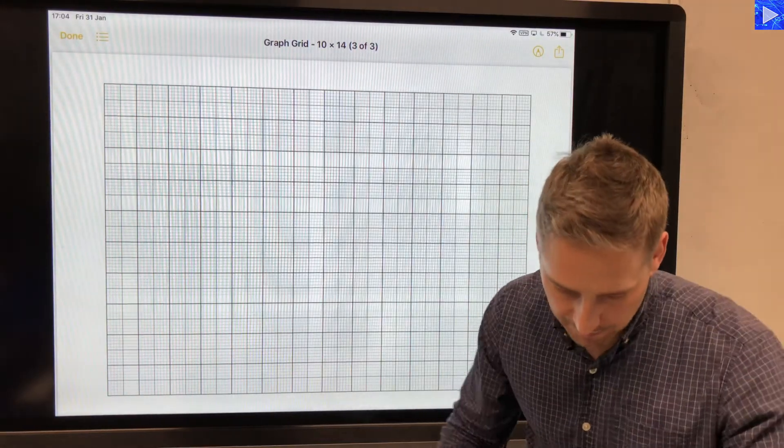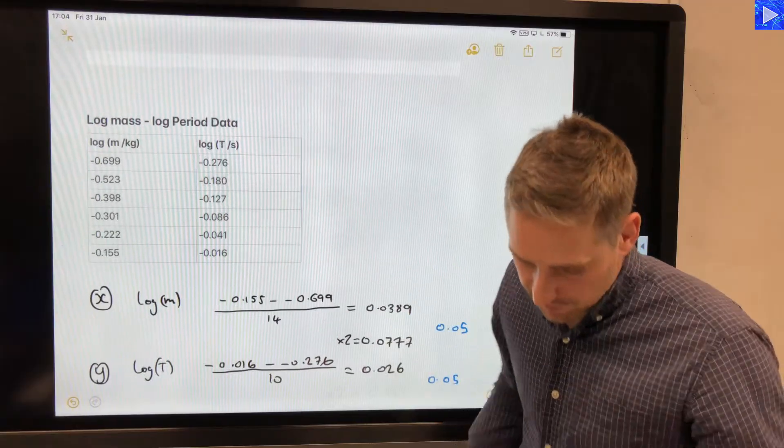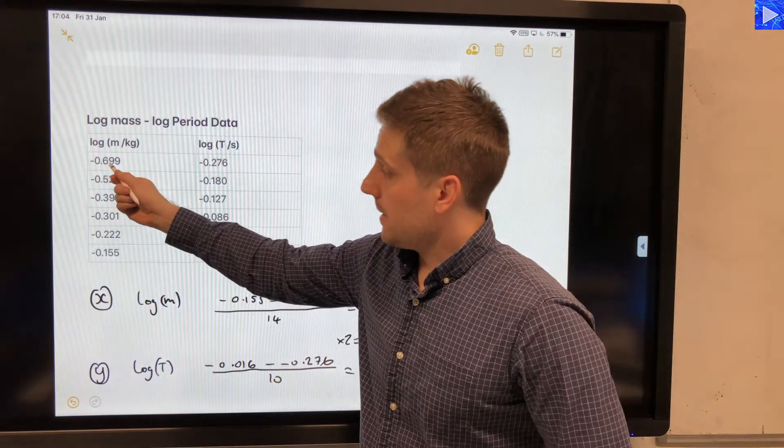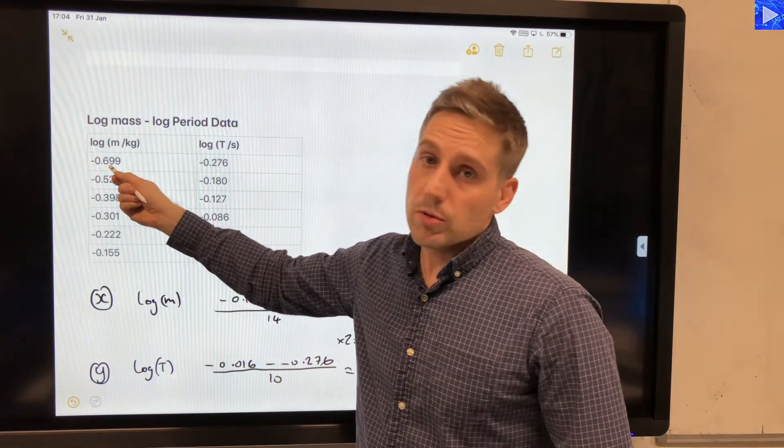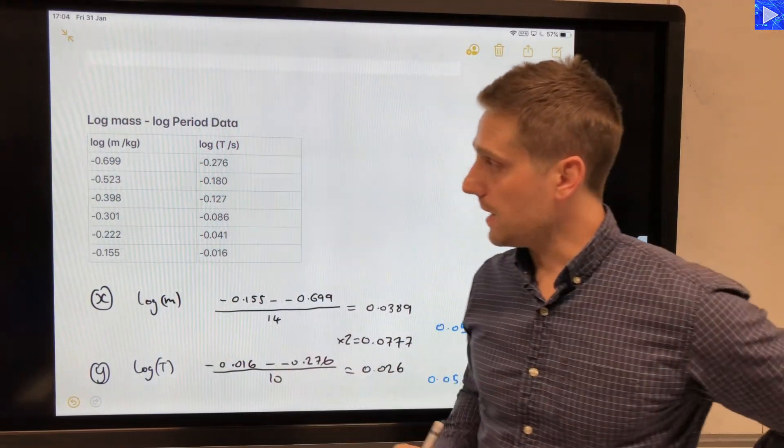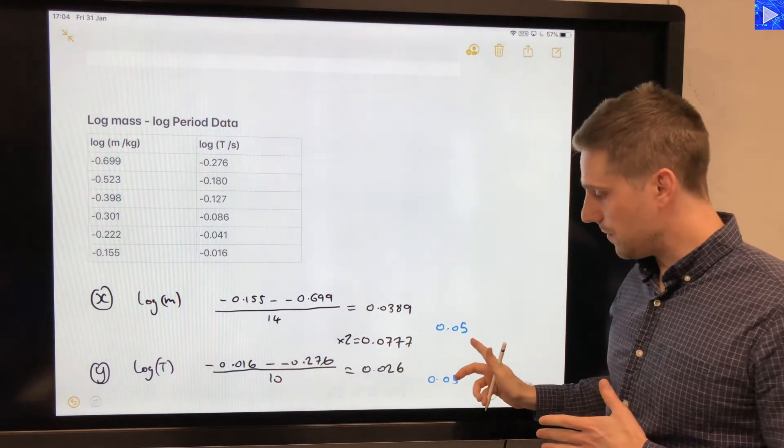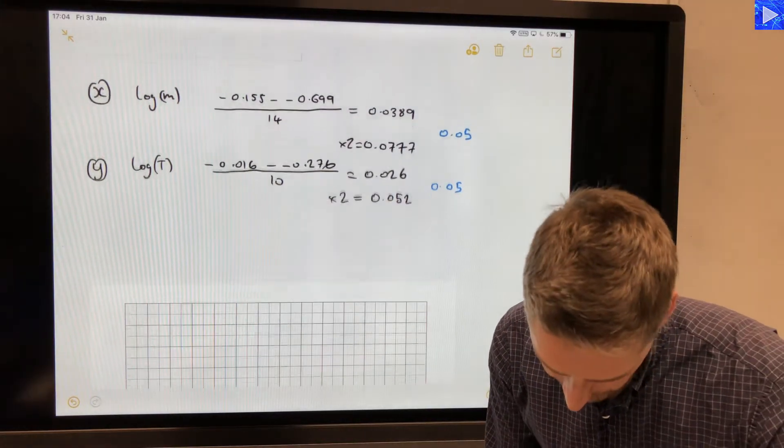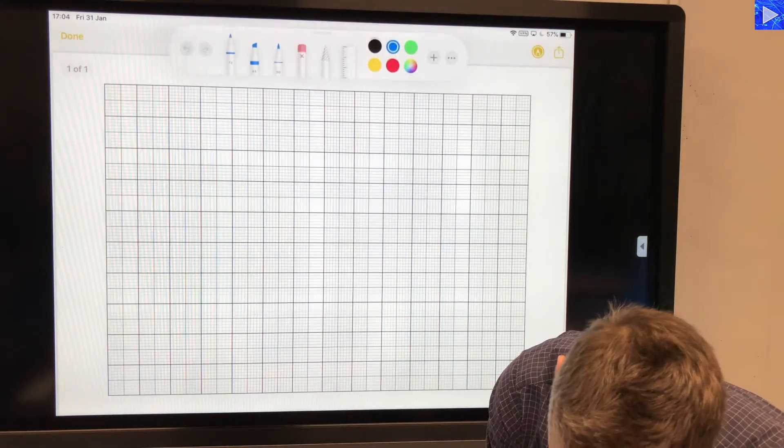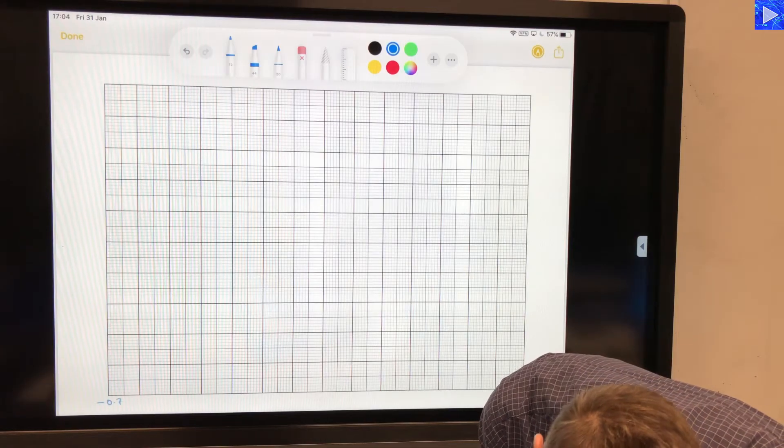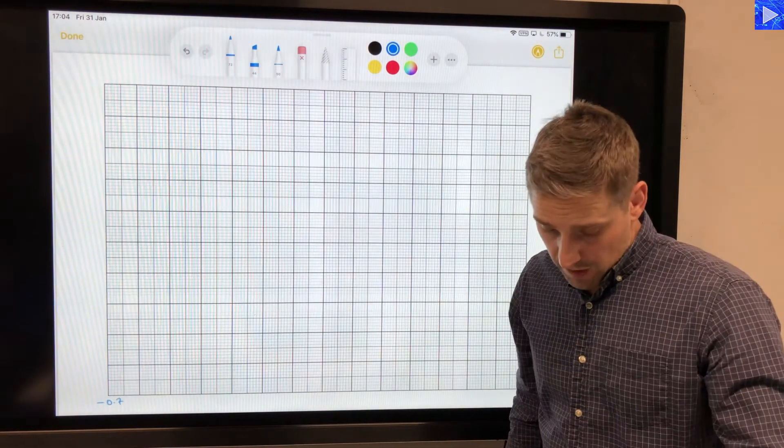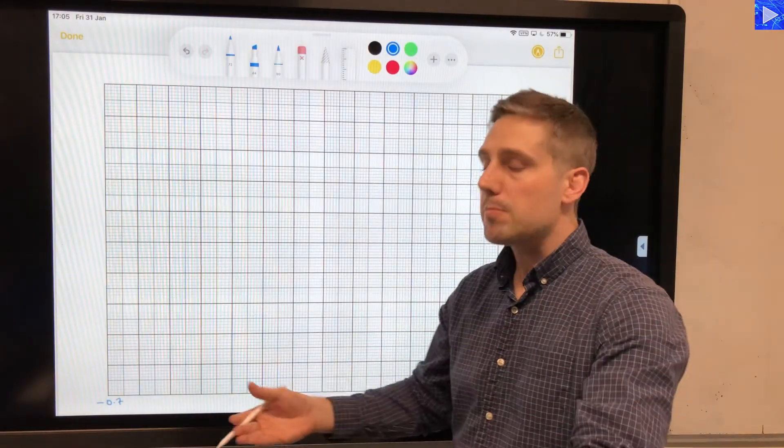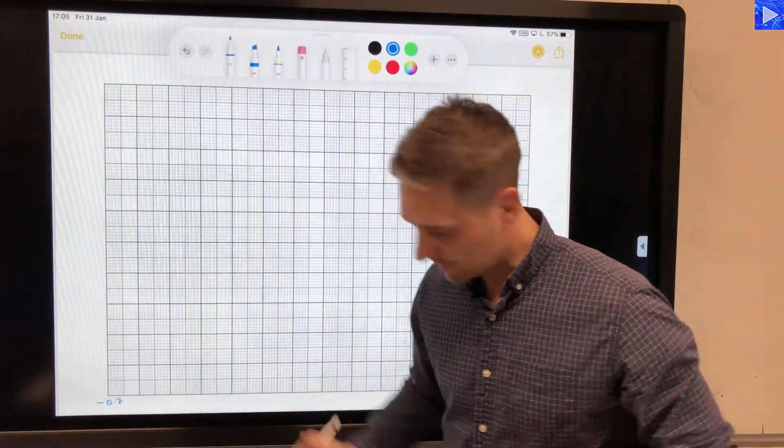So before I do that, we need to decide where we're actually going to start with these values. So here it really makes sense to start at minus 0.7, which is just below this, and it's round, it's going to work nicely with our 0.05. So what I'm going to do is start at minus 0.7. And the increment is 0.05. So for each two large squares, that would be plus 0.1. So this would be minus 0.6.